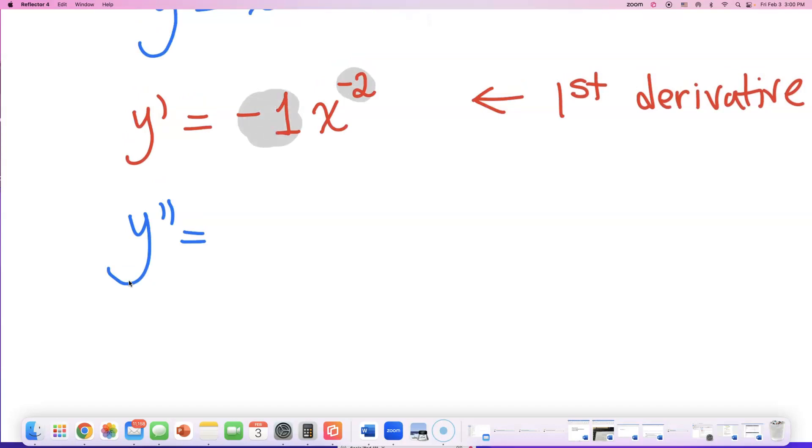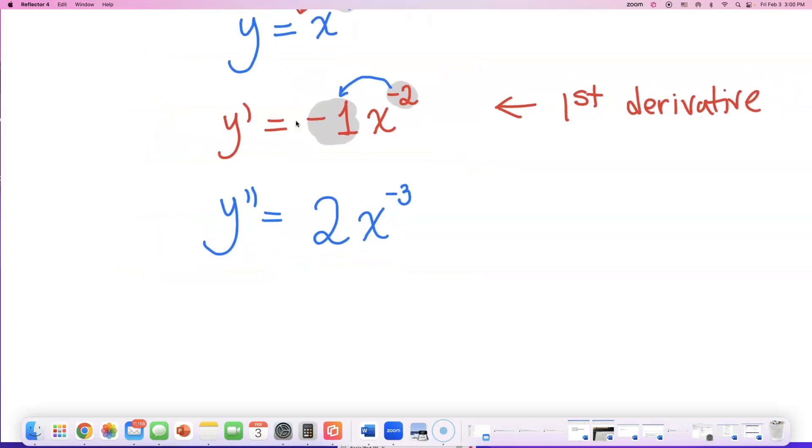And it's going to get multiplied by this negative 1. Negative 2 times negative 1 is positive 2. And the exponent goes down 1 from negative 2. So if you do negative 2 minus 1, you will agree that the new exponent is negative 3. So we found the answer. This is the second derivative.